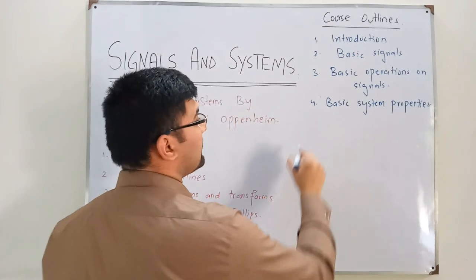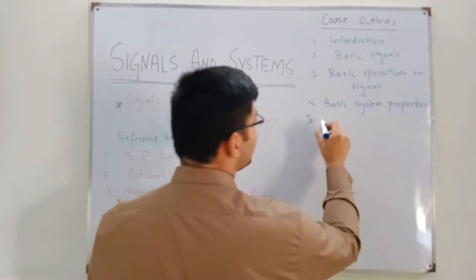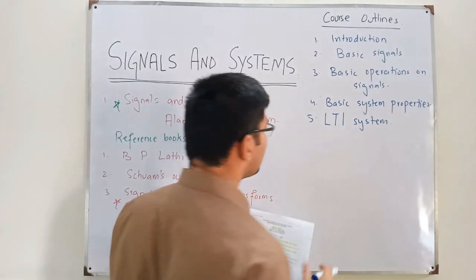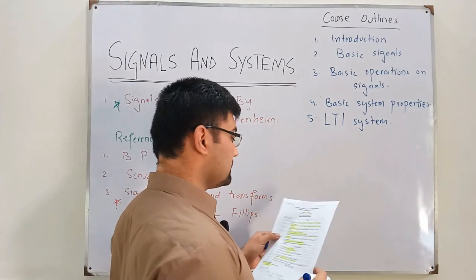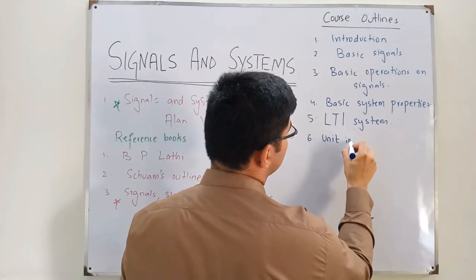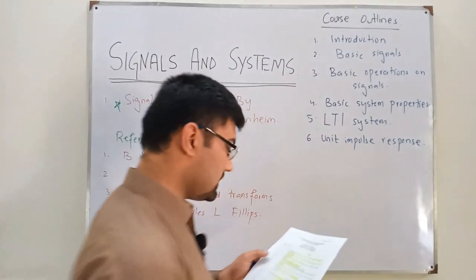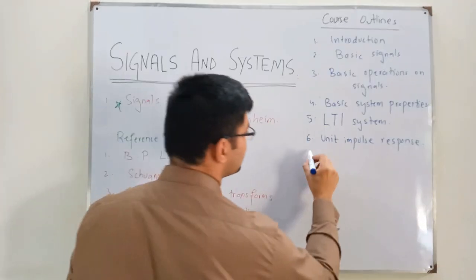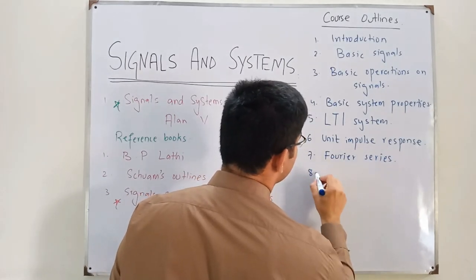After studying basic system properties, we move into the most important system we will study in great detail — the Linear Time Invariant, or LTI, system. After getting into LTI systems, we examine the unit impulse response and system properties. Then we move into Fourier Series, followed by the Fourier Transform.